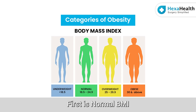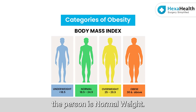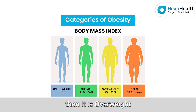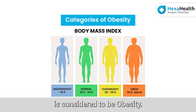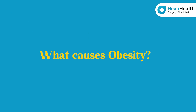First is normal BMI — that is non-obese or normal — which is less than 25. If the BMI is less than 25 then the person is normal weight. If it is more than 25 but less than 30 then it is overweight, and more than 30 is considered to be obesity.